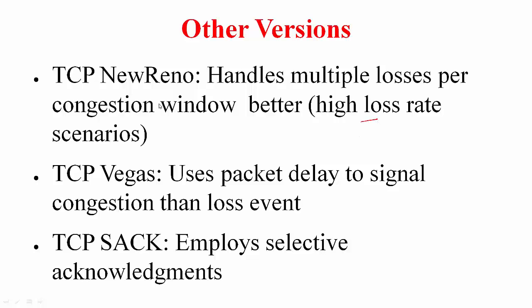To compensate, there is TCP New Reno, which handles multiple losses per congestion window better in high loss rate scenarios. There is also TCP Vegas, which uses packet delay to signal congestion rather than duplicate ACKs or timeouts, and TCP with Selective Acknowledgements (SACK), where the receiver specifically conveys all the holes in the receive window, allowing the sender to retransmit missed segments more efficiently rather than doing one retransmission at a time based on cumulative acknowledgements.